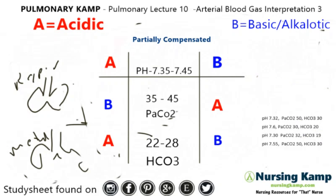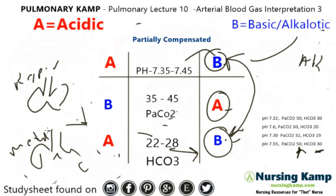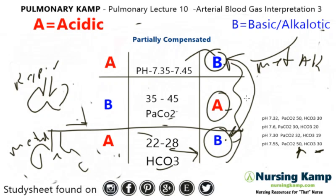Next: a pH of 7.55 — we're over on the alkalotic side. A PaCO2 of 50 — over here. And a bicarb of 30, which is greater than 28. Look — all on the outside again. We connect the two together. We know it's alkalosis, and this is the metabolic area — bicarb. Because they're all on the peripheral, it's partially compensated metabolic alkalosis.